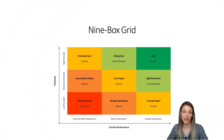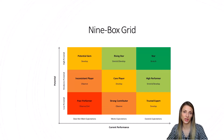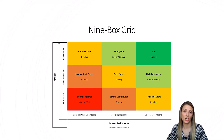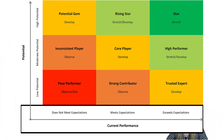Here is what a nine-box grid looks like. You can also find this example on the Canvas page. Along the vertical axis, we have employees' potential or promotability. Along the horizontal axis at the bottom of the graphic, we have employees' current job performance.